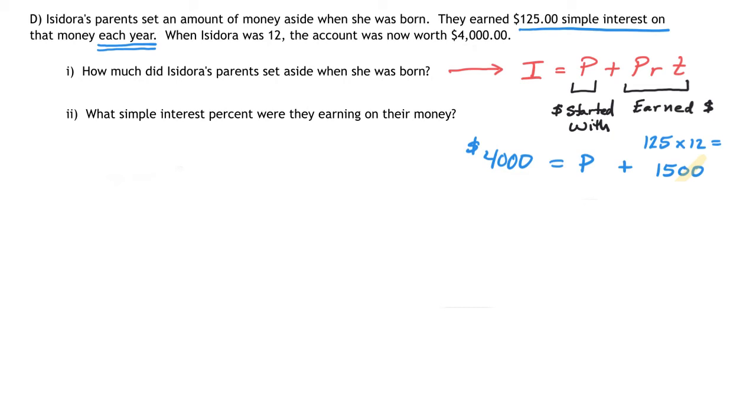Next, if I solve this for P, I'm going to subtract $1,500 from each side, and then I get a total starting investment of $2,500. That's your answer to the first part of this question, $2,500 for the initial amount set aside.